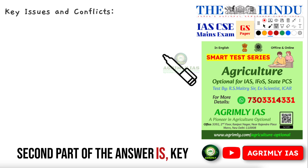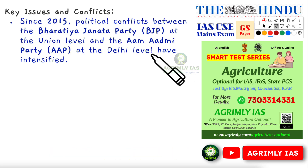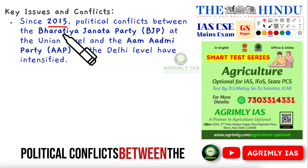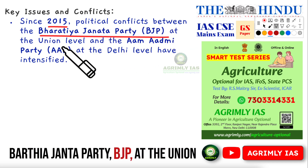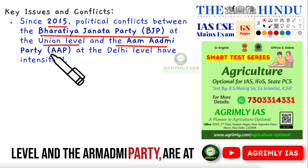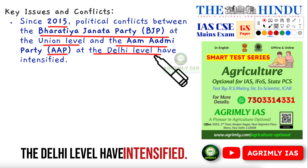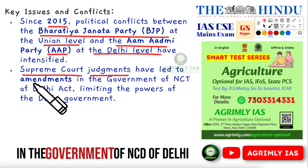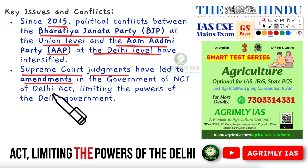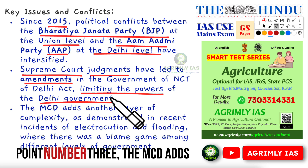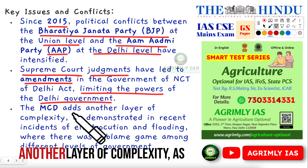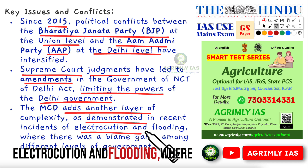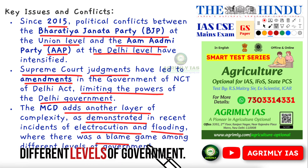The second part of the answer covers key issues and conflicts. Point one: Since 2015, political conflicts between the Bharatiya Janata Party (BJP) at the Union level and the Aam Aadmi Party (AAP) at the Delhi level have intensified. Point two: Supreme Court judgments have led to amendments in the Government of NCT of Delhi Act, limiting the powers of the Delhi Government. Point three: The MCD adds another layer of complexity, as demonstrated in recent incidents of electrocution and flooding, where there was a blame game among different levels of government.